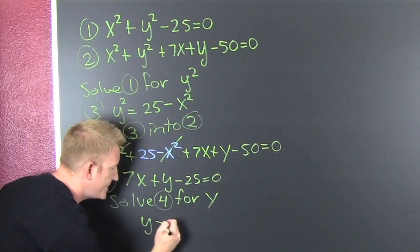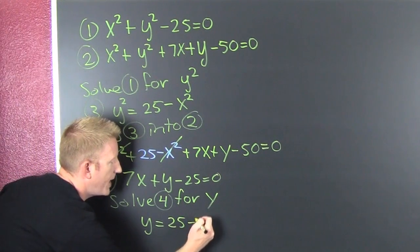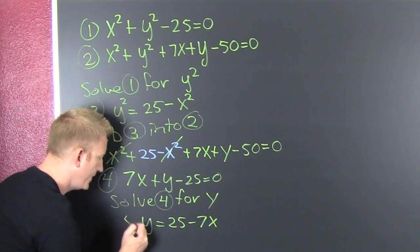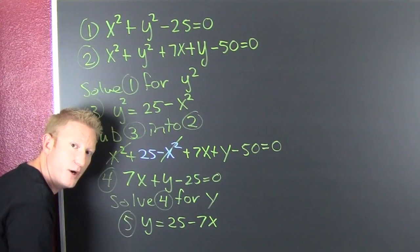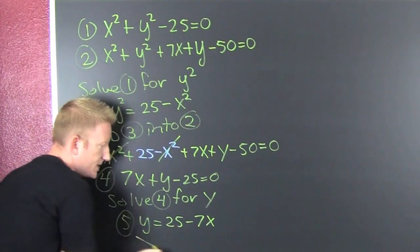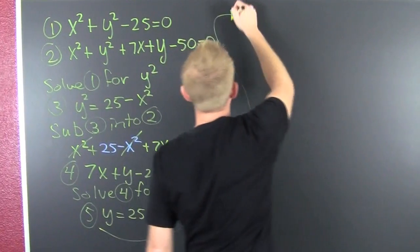Solving for y, I'm gonna have y equals 25 minus 7x. Call that equation 5. This is part of my double sub. I subbed it once and now I'm gonna sub it twice. I'm gonna take it to the top.